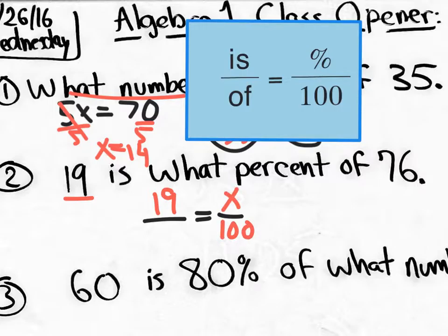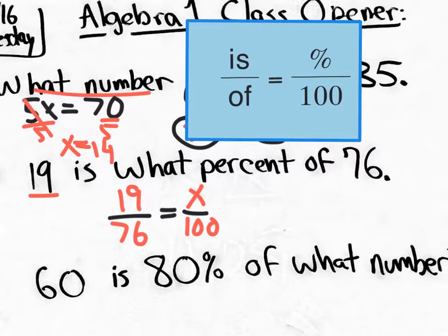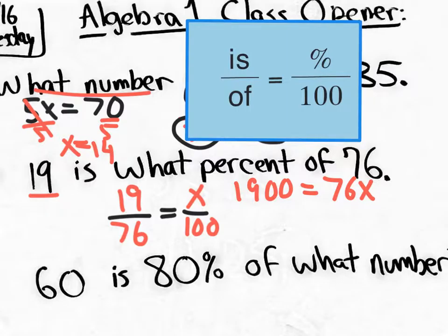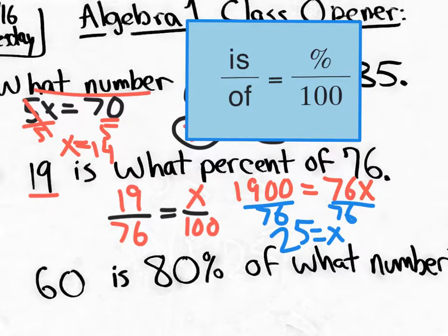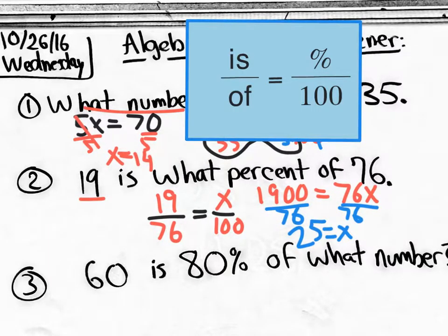We set up two fractions: 19 over 76 equals the unknown percent over 100. Rather than reducing the left side, let's use a calculator. Cross-multiplying gives 19 times 100 equals 1900, and that equals 76 times x. Dividing both sides by 76: 1900 divided by 76 on the calculator gives us 25. So x equals 25.